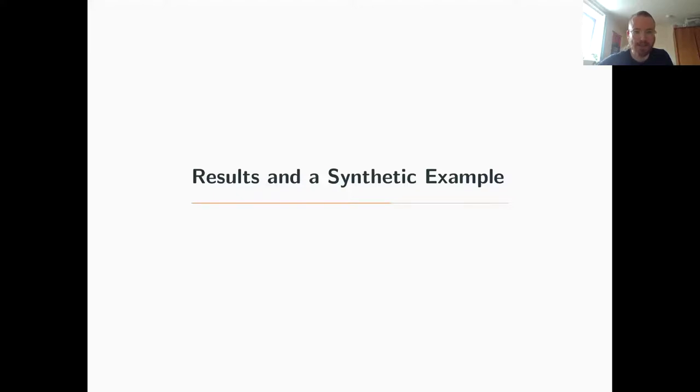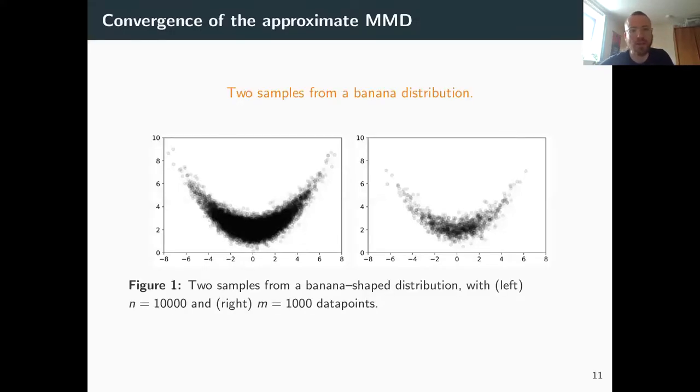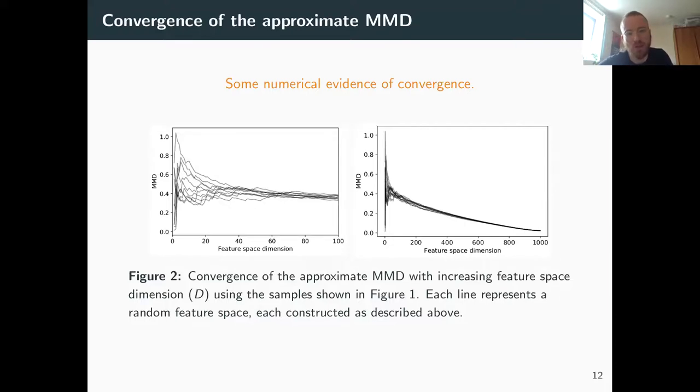So that's the MMD and how we minimize it. So here's some numerical evidence that this works. We drew some samples from a banana distribution, a large sample and a smaller sample. And then here you can see how this approximate MMD converges. You can see this, the left figure here is just the right but zoomed in, and what you can see is in the beginning with not that many features, not that high feature space dimension, then there's some oscillations which is kind of what we expected. But then as we add more and more features they all converge towards the same MMD. This is 10 different random feature spaces.